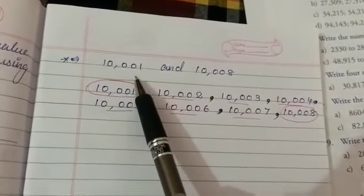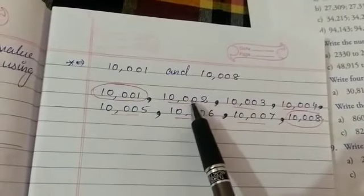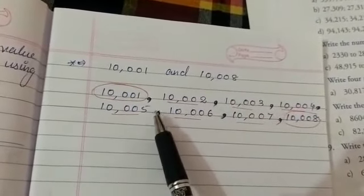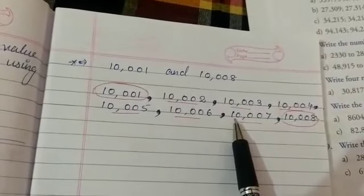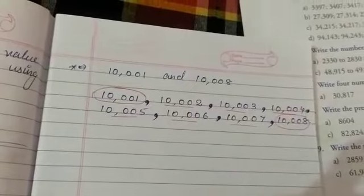So, what are the numbers between 1001, 1008? 1002, 1003, 1004, 1005, 1006, 1007 are the numbers between these two. Clear?